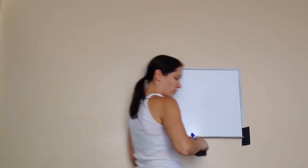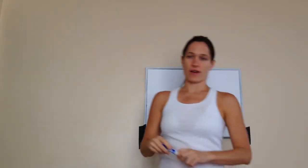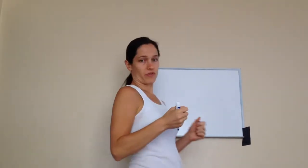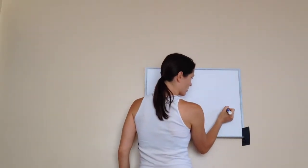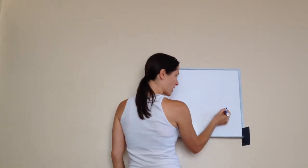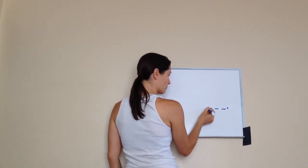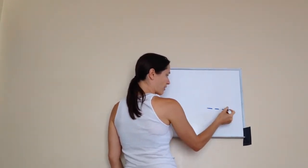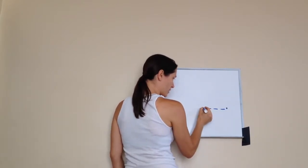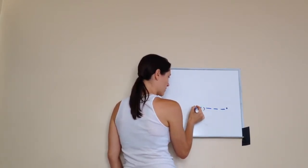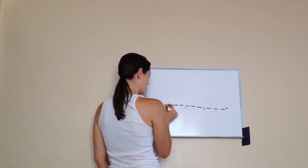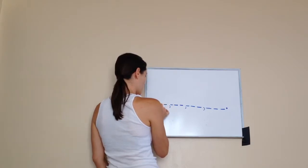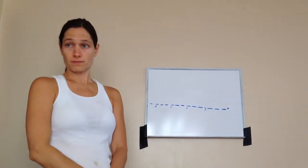So let's first talk about place value. Place value is very easy to understand in math because it has a pattern. So let's start with our decimal, and we're going to move to the left of our decimal. Every group is going to have 3 in it, and then a comma, and then 3, and a comma, and 3, and a comma, and 3, and we just keep going.